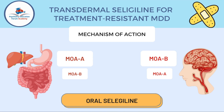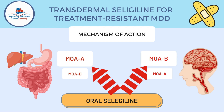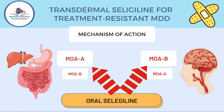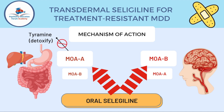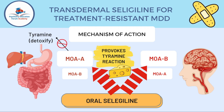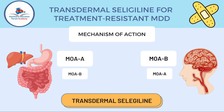Let's understand the mechanism of oral selegiline first, so we can compare oral versus transdermal selegiline. When you give somebody oral selegiline, it goes through the GI tract and liver, then the brain — inhibiting both MAO-A and MAO-B. Serotonin, norepinephrine, and dopamine all go up, but tyramine is not getting detoxified. If the patient eats tyramine-rich food, it will provoke what we call the cheese reaction.